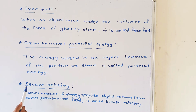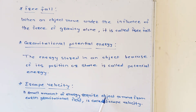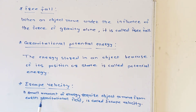Now see the last definition on page number 13: escape velocity. Its definition is — the minimum amount of energy required for an object to move away from Earth's gravitational field is called escape velocity.